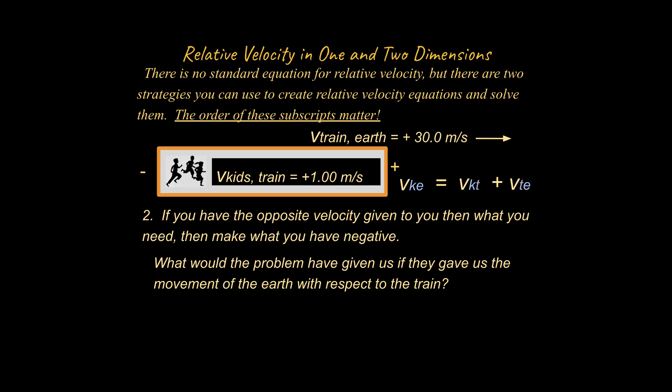Well, it would appear to be moving from front to back. And so if they gave us the velocity of the Earth with respect to the train, it would be to the left in this diagram. So it would be a negative 30 meters per second. Does that make sense? Hopefully it does. Because it's getting a little tougher now to understand. But if they had given us the velocity of the Earth with respect to the train, they would have given us negative 30 meters a second.